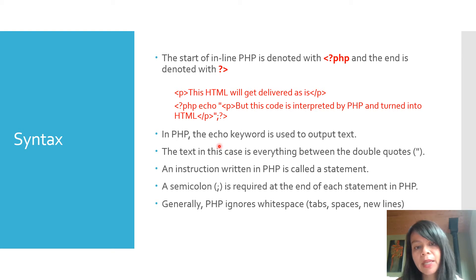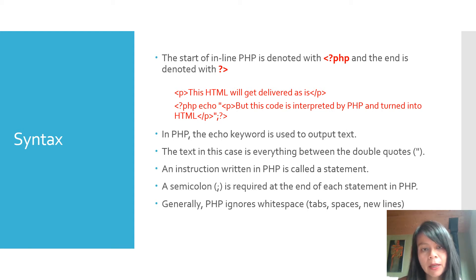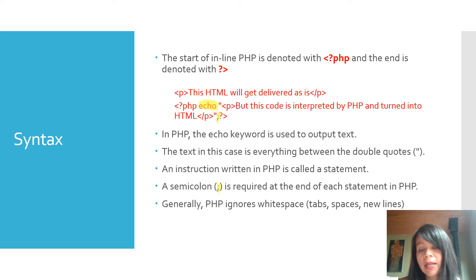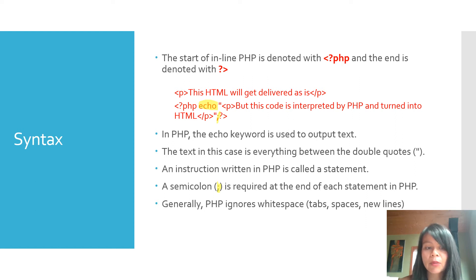In PHP, the echo keyword is used to output text. Everything in the quotations after echo is going to be output as text — the text is everything inside the double quotations. The semicolon is required at the end of each statement in PHP. In terms of whitespace, PHP ignores it, so you can have whitespace before or after elements and it doesn't matter — unless it's inside a keyword like echo or PHP, in which case it does matter.